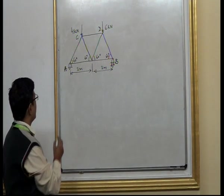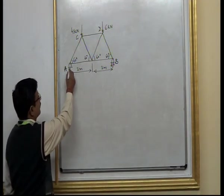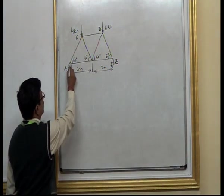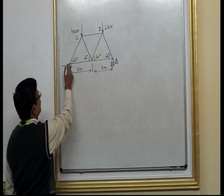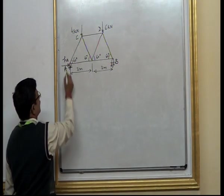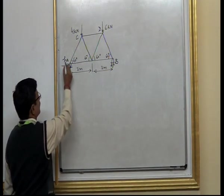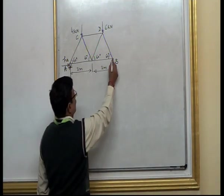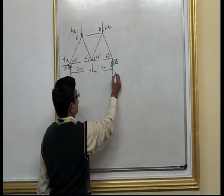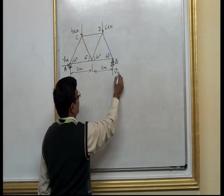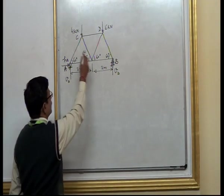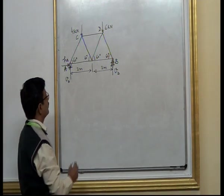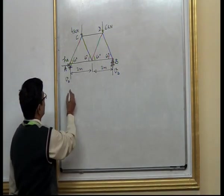The first step is that we will remove the support reactions. I replace the hinge support with two unknowns — a horizontal unknown and a vertical unknown — because it is a horizontal and vertical hinge support. The roller support will be replaced by one unknown. We then assume the complete truss as a rigid body and try to solve it by applying equations of equilibrium.